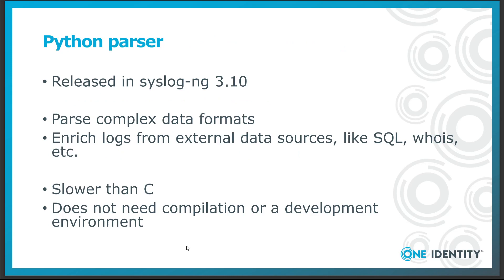The Python parser was first released in syslog.ng 3.10. It can parse complex data formats where simply combining various built-in parsers is not enough. It can also be used to enrich log messages from external data sources like SQL, DNS, or WHOIS. The main drawback of the Python parser is speed and resource usage — C is a lot more efficient. However, for the vast majority of users this is not a bottleneck. Python also has the advantage that it does not need compilation or a dedicated development environment, making Python scripts easier to share among users than native C.